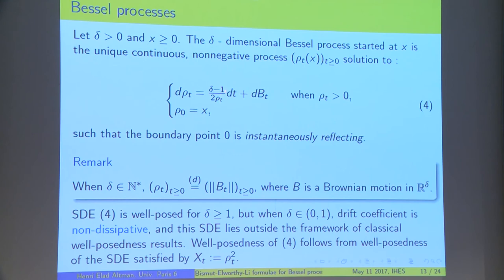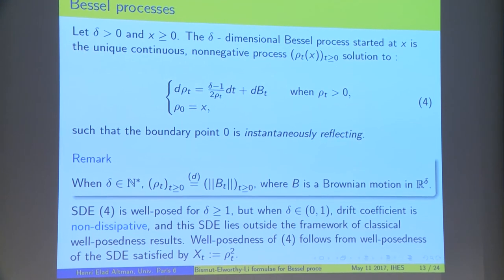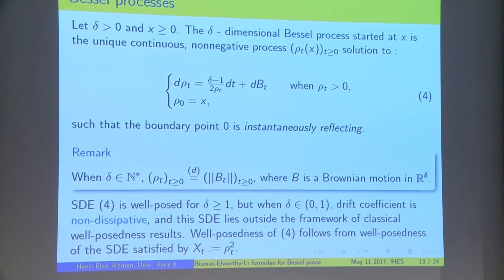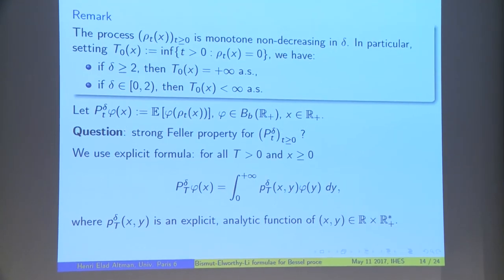When δ is bigger than 1, here the drift is dissipative. So, actually it is decreasing. So, we have no problem. We have existence and uniqueness result. But, the problem comes when δ is smaller than 1. And, to obtain well-posedness of this equation, we actually resort to some transformation of the square. And, we see that the square satisfies some well-posed SDE. This is the way we obtain the well-posedness for this SDE for any δ.